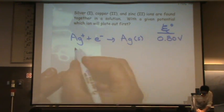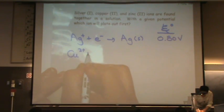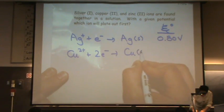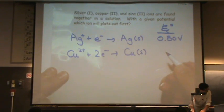The other one is copper. Copper two plus, plus two electrons. And again, this is straight from the table, goes to copper solid, it's plating out, and that's 0.34 volts.